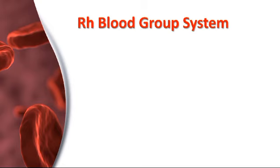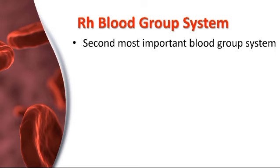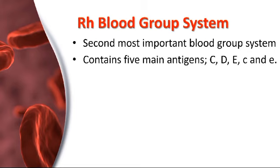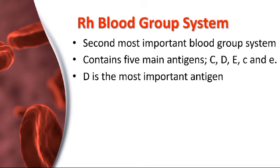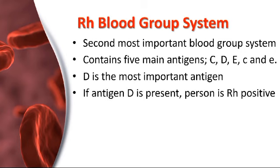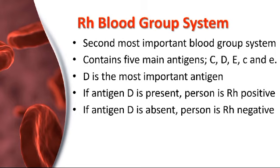Now we will talk about the RH blood group system. In addition to the ABO blood group system, several other blood group systems are also present. The RH blood group system is the second most important after ABO. There are five common antigens in the RH system: C, D, E, c, and e, where D is the most important antigen. If antigen D is present on the surface of red blood cells, the person is called RH positive, and if antigen D is absent, the person is called RH negative.